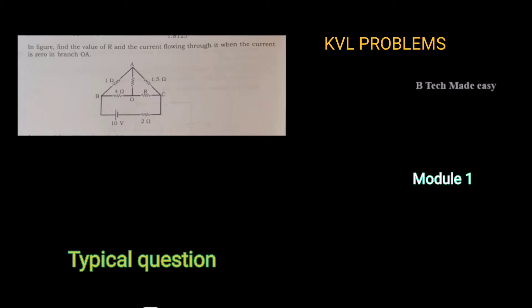When we start with this circuit, we start with the condition. If the current in branch OA is zero, we start with that condition to find the current value and then R.